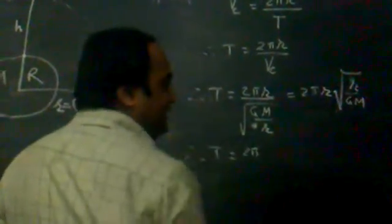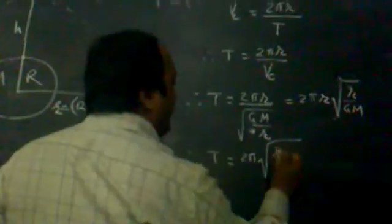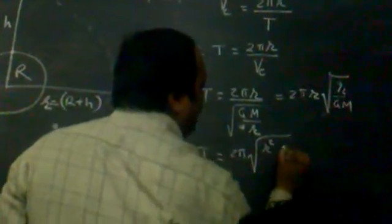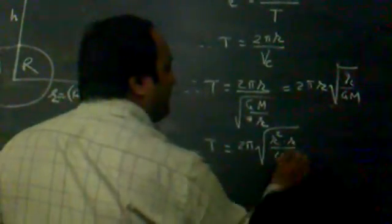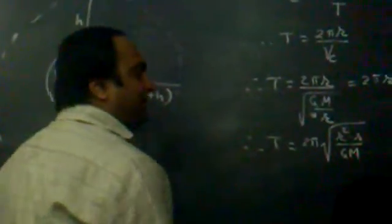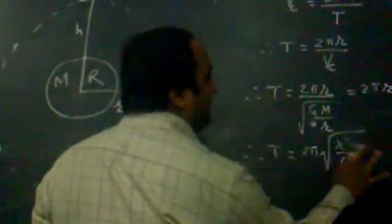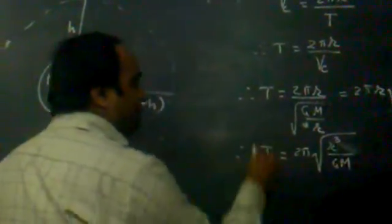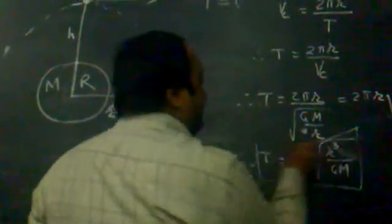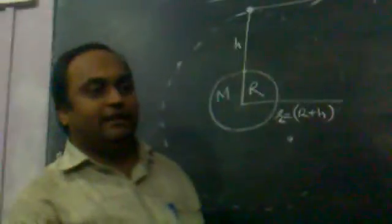Bringing r inside the square root, this becomes r squared times r, which is r cubed upon GM. This is the expression for the time period of the satellite.